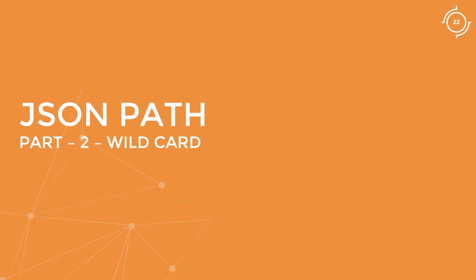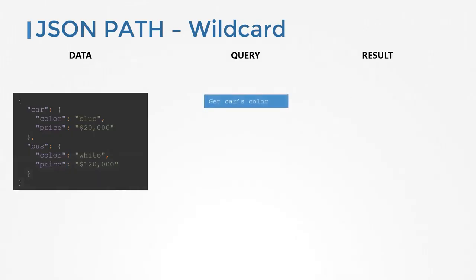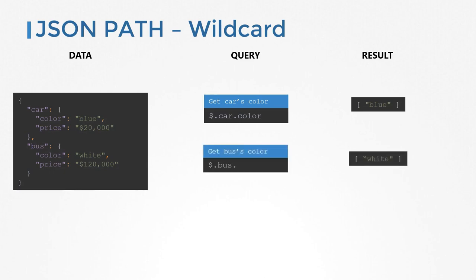Hello and welcome to this demo. My name is Mumshad Manambath and this is a continuation of the earlier JSON path video where we got introduced to some of the basics of JSON path. In this video, we will get introduced to some of the advanced options available while working with JSON path queries. Let us use the same example as before — a dictionary with two child dictionaries car and bus, each with properties color and price. To get the color of the car, we use the query $.car.color. And to get the color of the bus, we say $.bus.color.